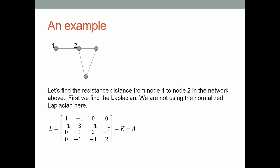So let's look at an example. We have a small network with four nodes, and we have two of the nodes labeled one and two. That's going to be our U and our V, and we want to find the distance between, that is the resistance distance between nodes one and two.